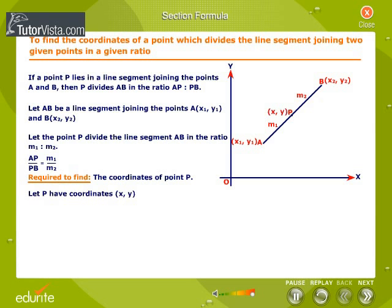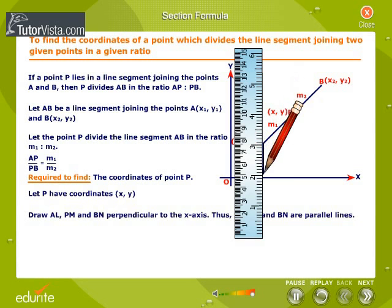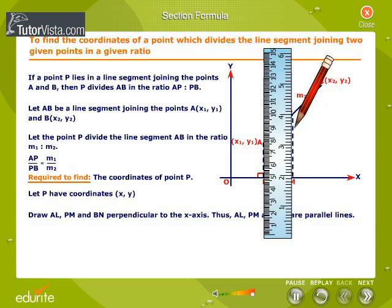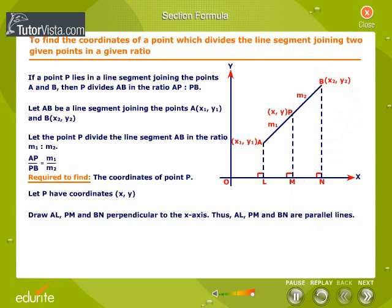Let P have coordinates X, Y. Draw AL, PM, and BN perpendicular to the X axis. Thus, AL, PM, and BN are parallel lines.